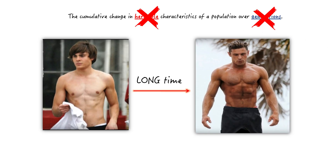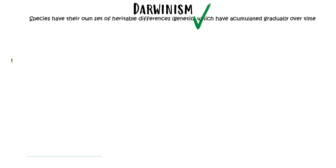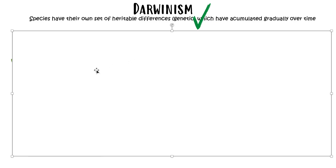If that made sense to you, then you 100% get evolution. What we just talked about — that definition of evolution — can also be called Darwinism, because the guy who came up with the theory of evolution was Darwin.